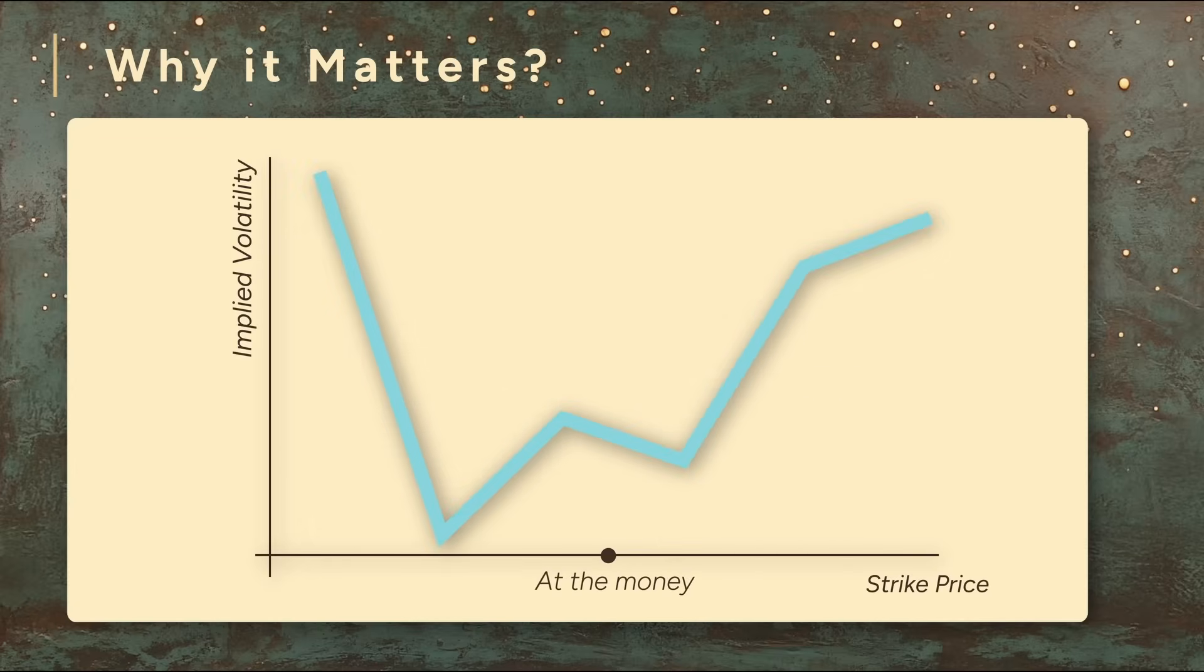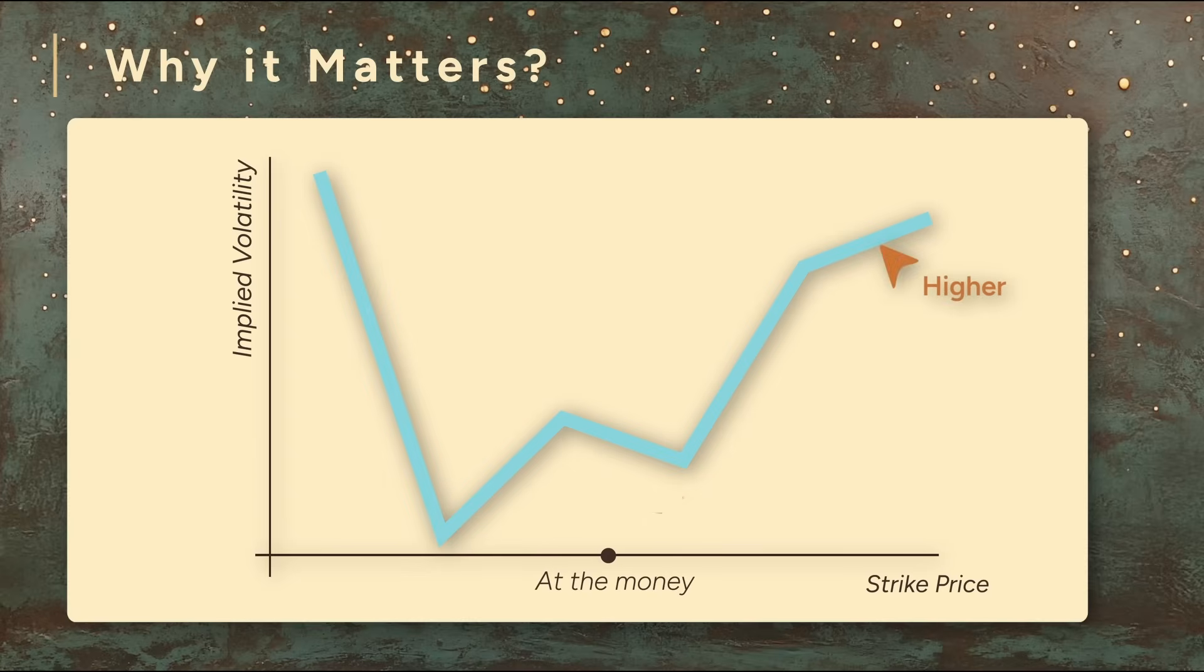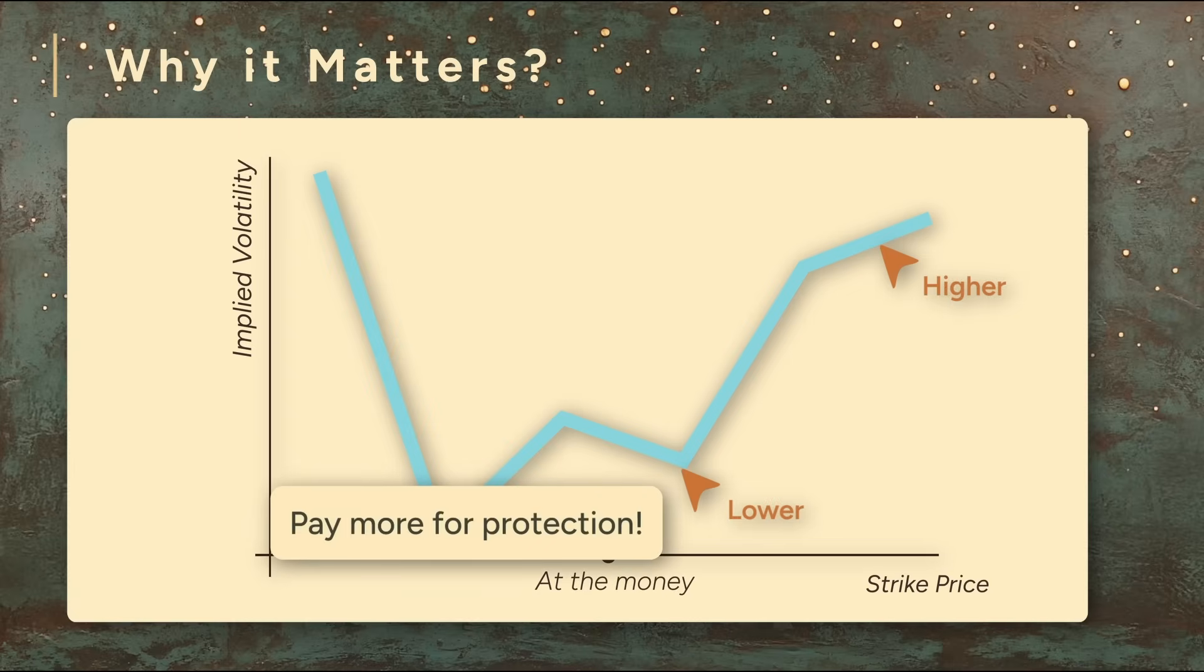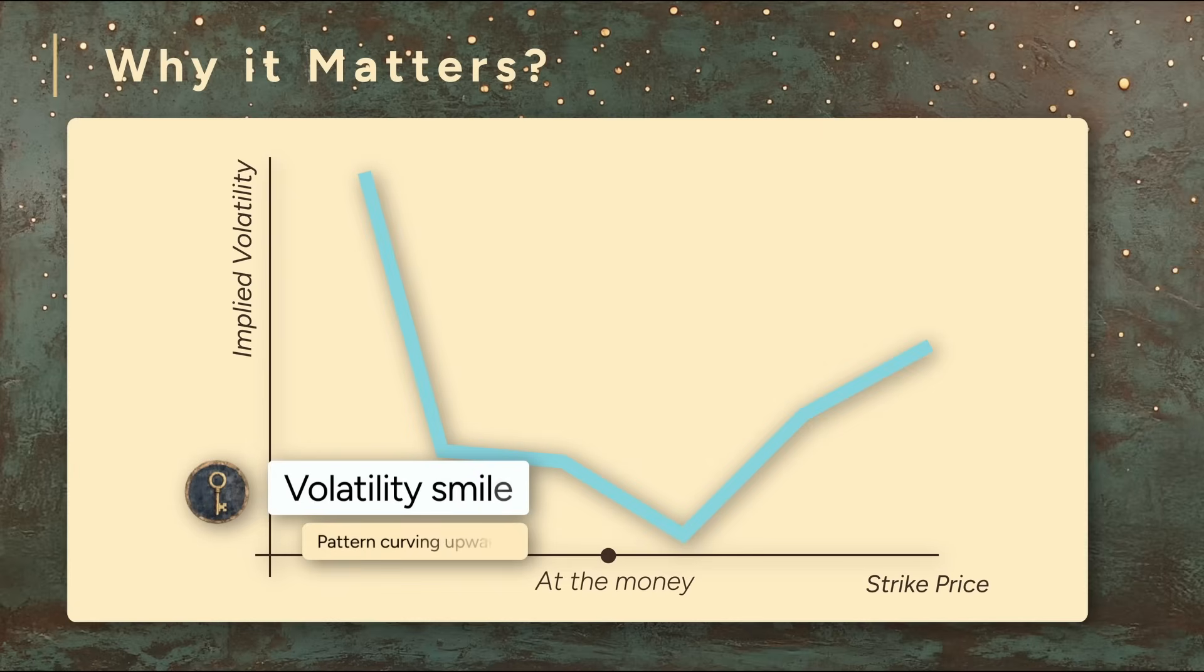Options far out of the money tend to have higher implied volatilities than those near the money. A common reason is that traders are willing to pay more for protection against possible catastrophic moves. This pattern is called the volatility smile.